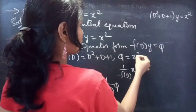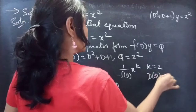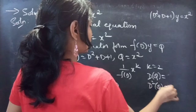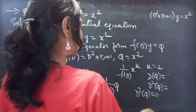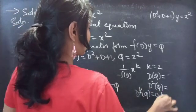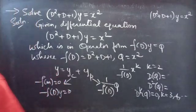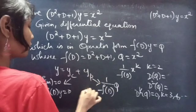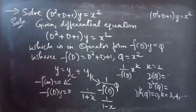Just compare x^k with x² (i.e., Q = x²), so k = 2. We'll get derivatives of Q up to d²(Q). From d³(Q) onward, we'll get 0. In general, d^k(Q) = 0 for k = 3, 4, and so on. We'll also write 1/f(D) in the form 1/(1 + x) or 1/(1 − x), and then apply binomial series expansion to find yp.